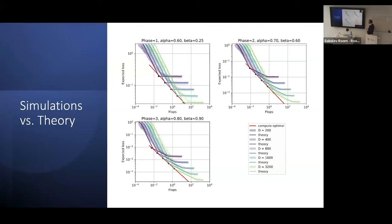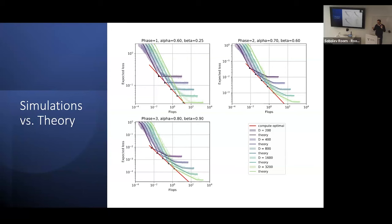I have one more slide: a simulation showing what happens in a couple of examples. I've superimposed the theory curves on top of runs of SGD. The match is only up to constants — we've put the actual constants from the computation to draw the lines, but in fact the theory tells you you're within a band, so you'd have to fatten these to say the loss curve stays within the band. I've talked for a while and I'm getting close to the end. I'm happy to answer any questions. Thank you for your attention.